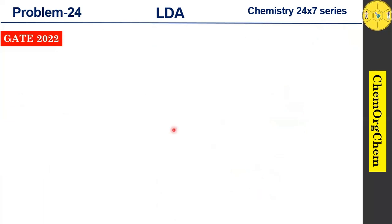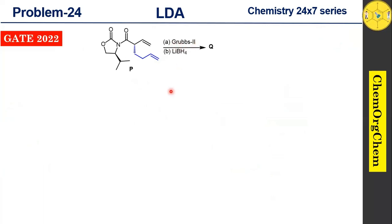We have successfully found answer B. The next reaction condition is Grubbs 2 catalyst. When you see Grubbs 2, this reaction is based on ring closing metathesis. Ring closing metathesis is a critical step in our problem — it is a powerful method to form cyclic compounds by closing a ring structure via the metathesis reaction.